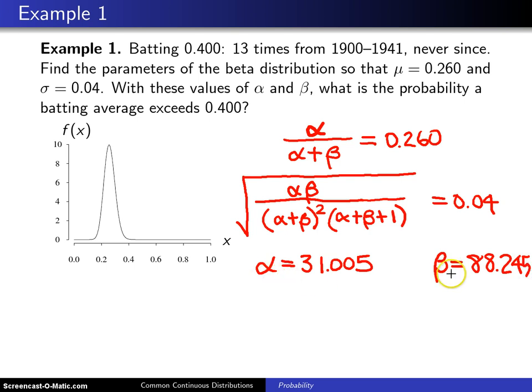When you take those two parameter values and draw the probability density function for the beta distribution, you get this distribution right here. Notice that it is centered around 0.26 as requested, and its standard deviation is 0.04, and that seems reasonable as well. It has sort of a non-symmetric bell shape to it.